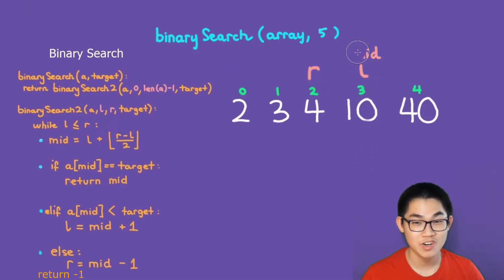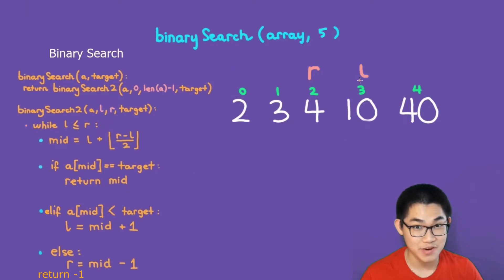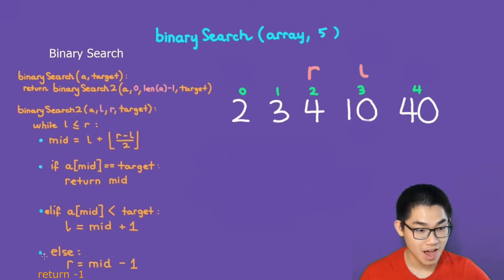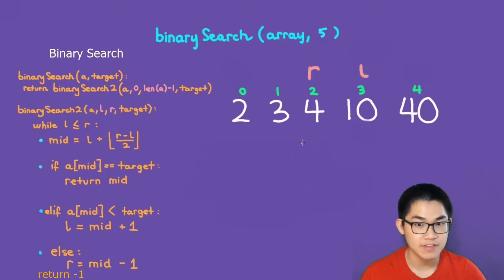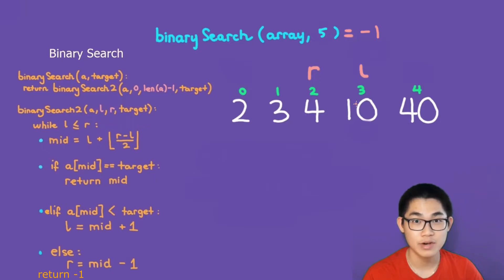We no longer need mid. Back at the top: is left smaller or equal to right? No, it is not. So we return minus 1, meaning 5 is not inside this array. This binary search returns minus 1, and that completes the binary search.